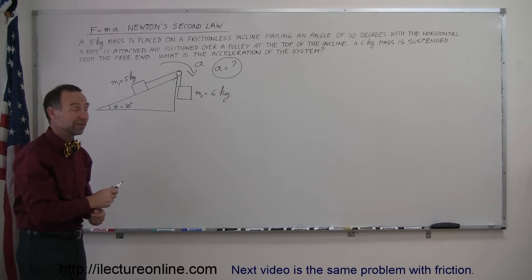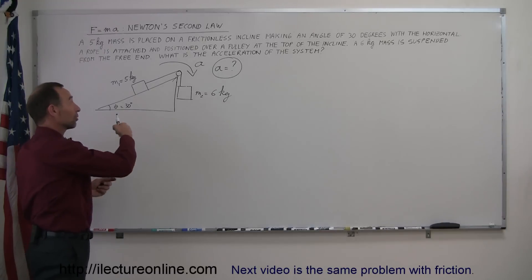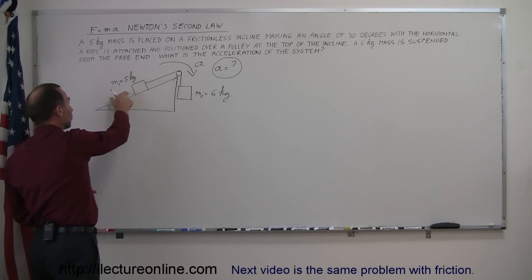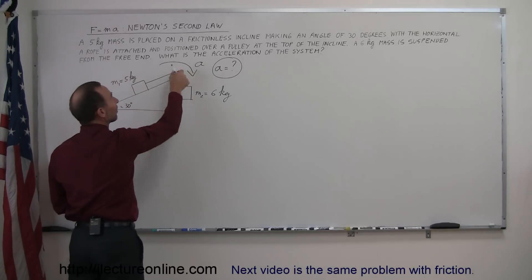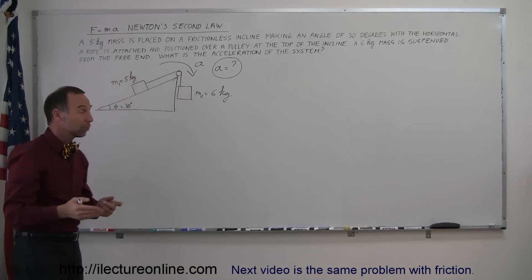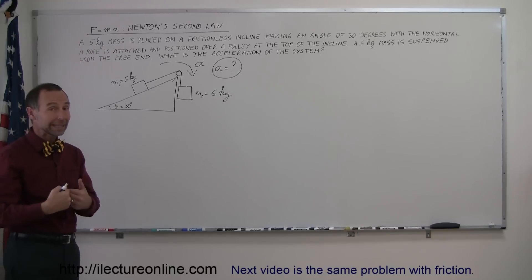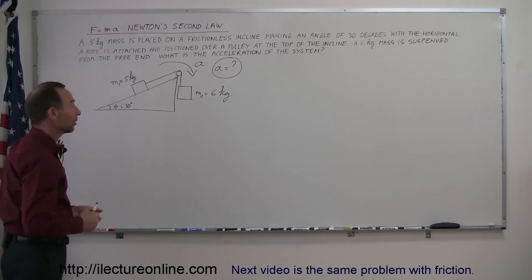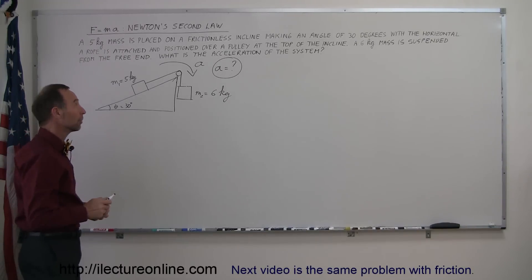Now, what if I guessed wrong? What if it's actually in the other direction? What if the real acceleration in the end ends up being that this mass is moving down the incline and this mass gets pulled up? Well, then my answer would be a negative answer, which would indicate to me that I assumed the wrong direction. So don't worry about that. If you guessed wrong, not a problem.